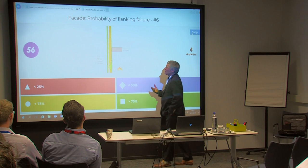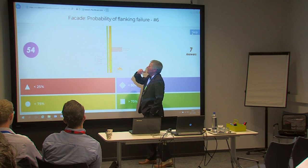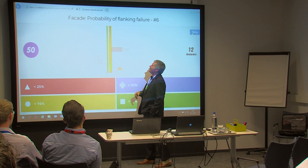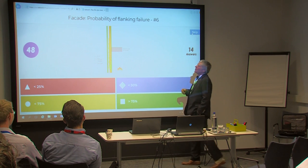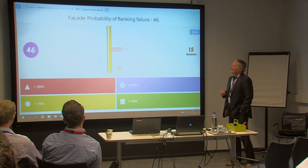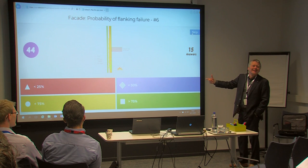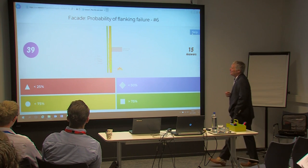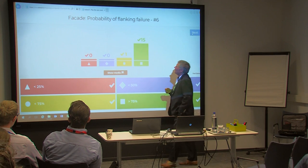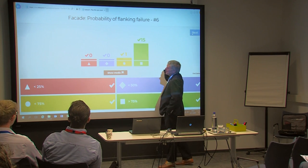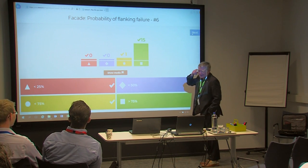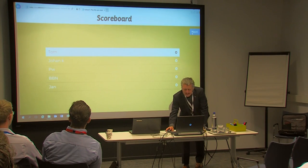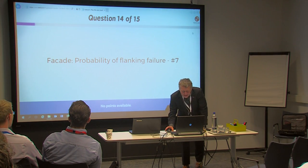The sixth facade detail is the same cavity construction but with combustible material layers. The flames in the diagram suggest flame spread possibilities. Results show a large failure probability, which was the expected answer.